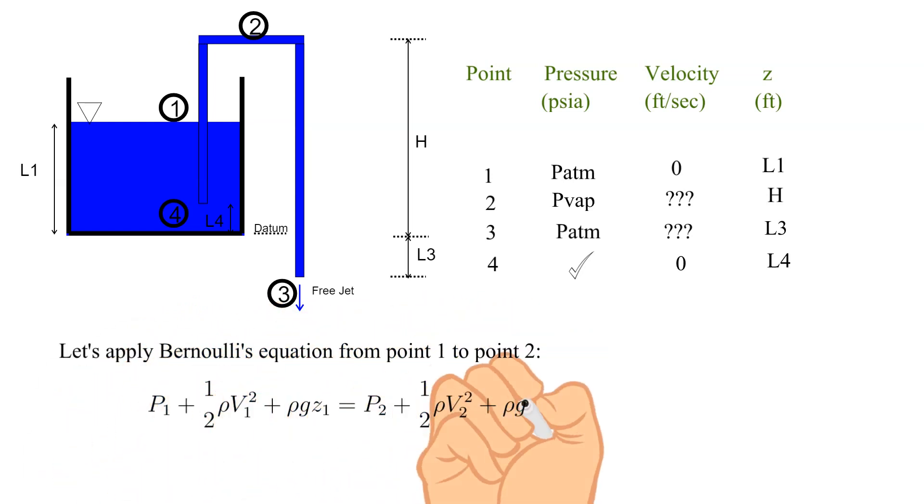Let's apply Bernoulli's equation from point 1 to point 2. First we will apply what we know. The pressure at point 1 is atmospheric. The velocity at point 1 is zero. The elevation at point 1 is L1. The pressure at point 2 is set at the vapor pressure.